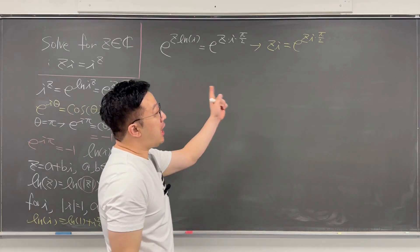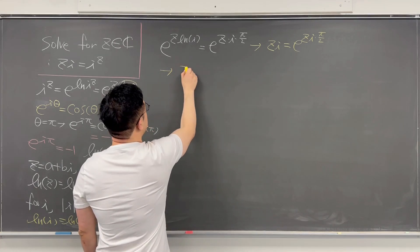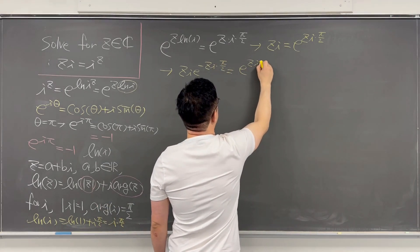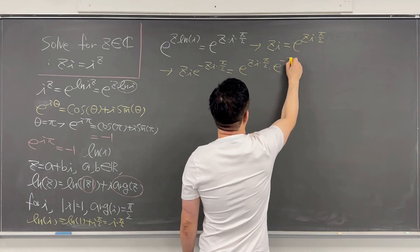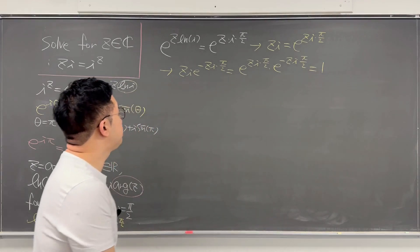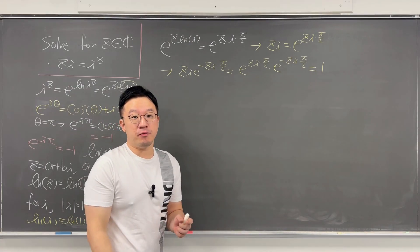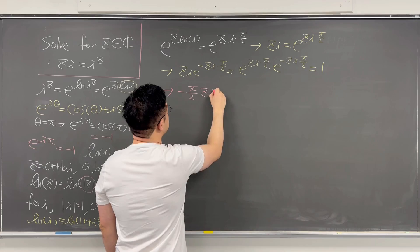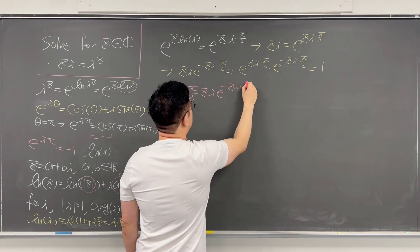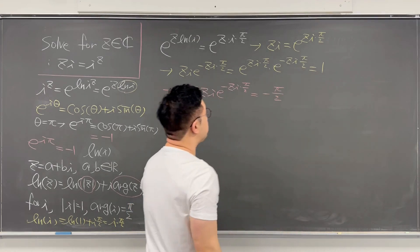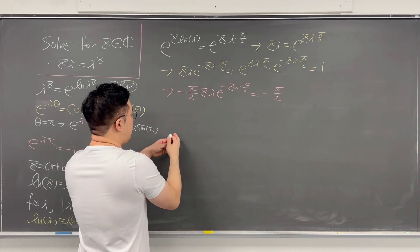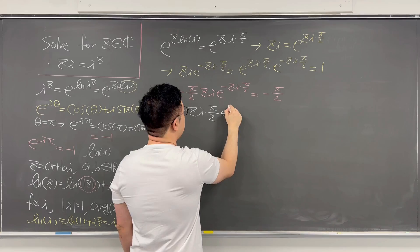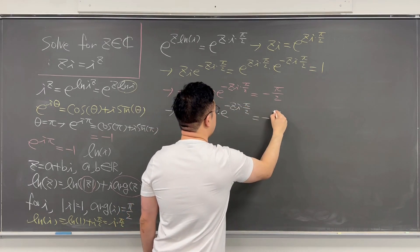Multiplying e to the power of negative zi*pi/2 to both sides, we get e to the power of zi times e to the power of negative zi*pi/2 equals e to the power of z*i*pi/2 times e to the power of negative zi*pi/2, which equals 1 on the right side. Then multiplying negative pi/2 to both sides gives us: negative pi/2 times z times i times e to the power of negative zi*pi/2 equals negative pi/2.